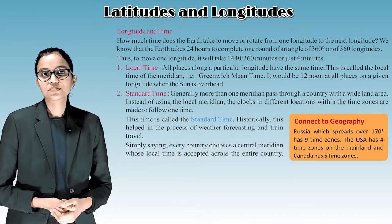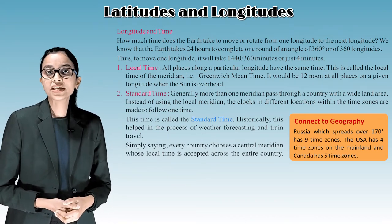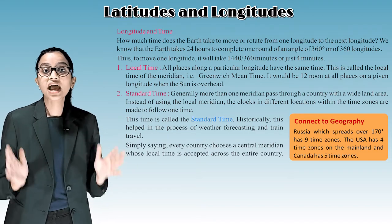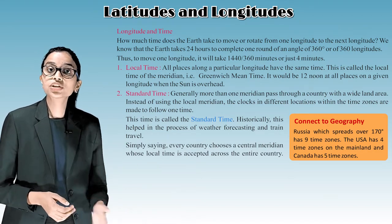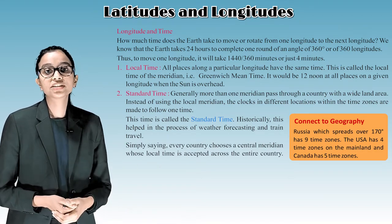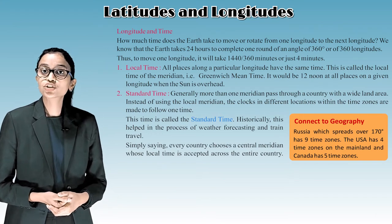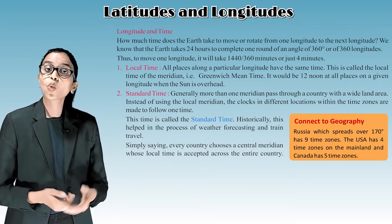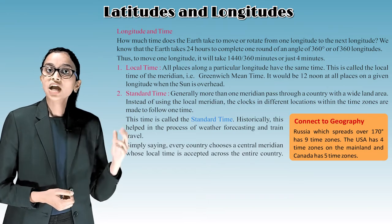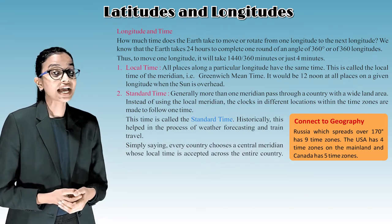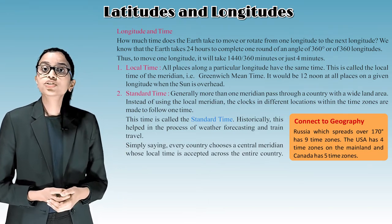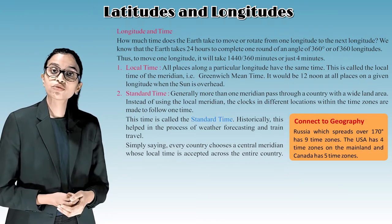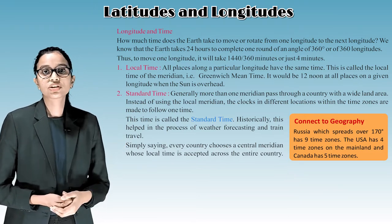Standard time: Generally, more than one meridian passes through a country with a wide land area. Instead of using the local meridian, clocks in different locations within the time zones are made to follow one time. This time is called the standard time. Historically, this helped in the process of weather forecasting and train travel.